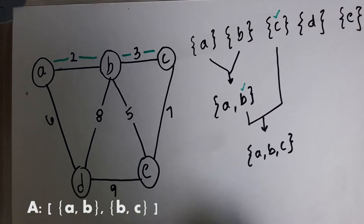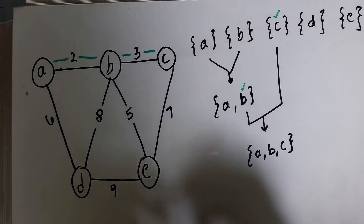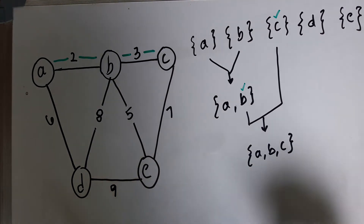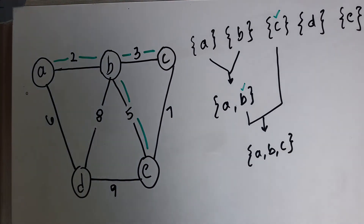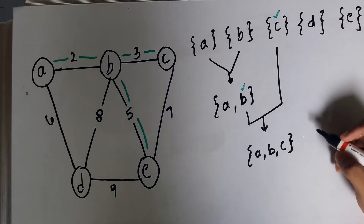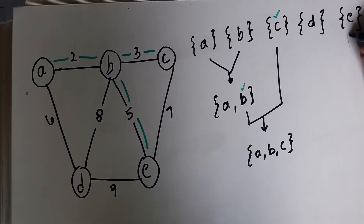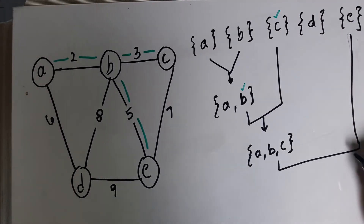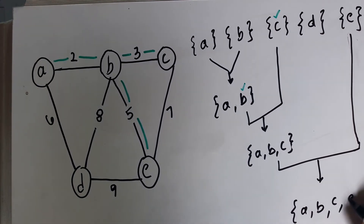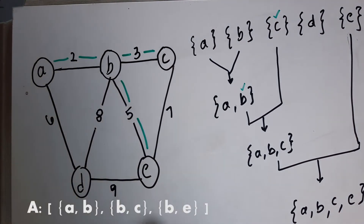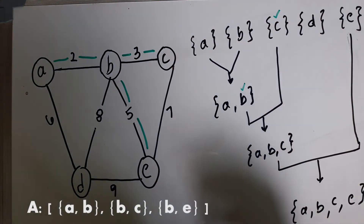We discard that edge from the list and choose the next minimum edge, which is B and E. We check if B and E belong to the same set — they do not, so we merge them. The set becomes {A, B, C, E} and we add this edge to our global set A.